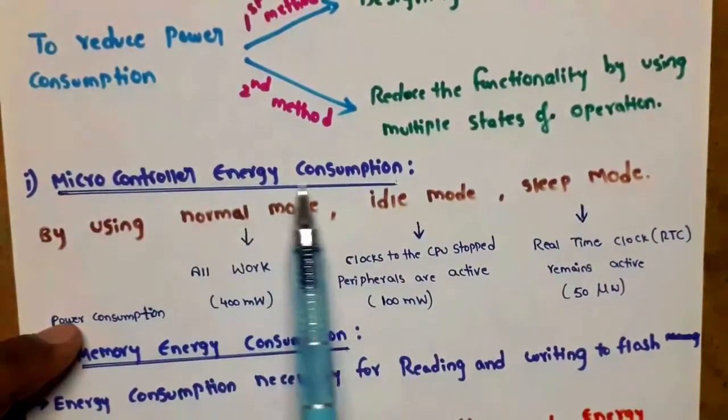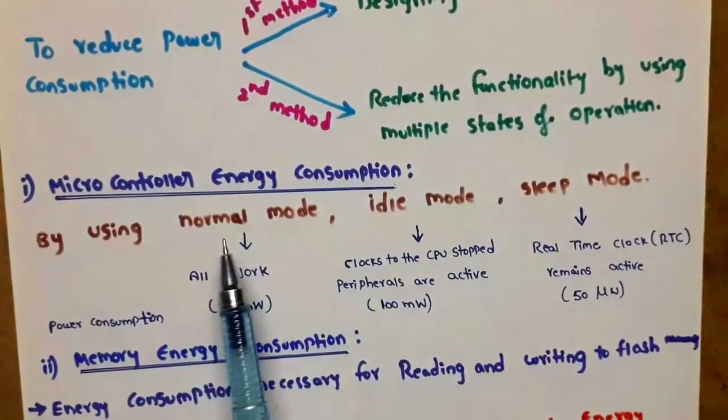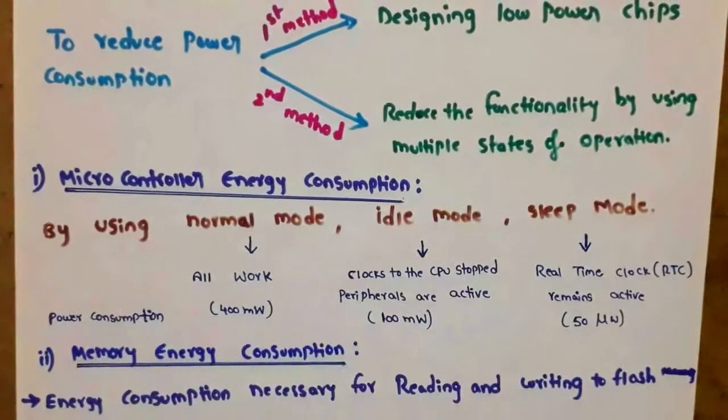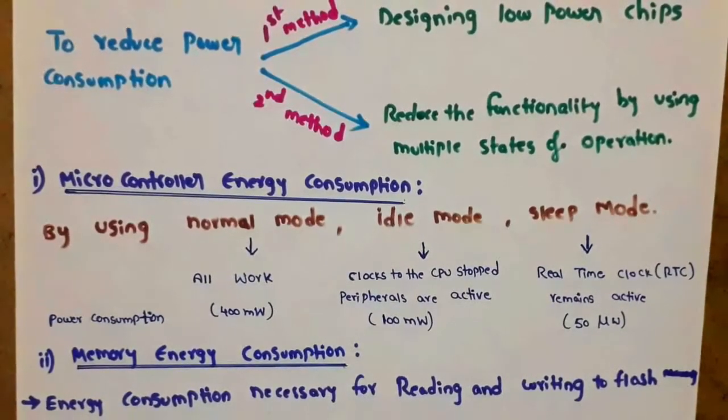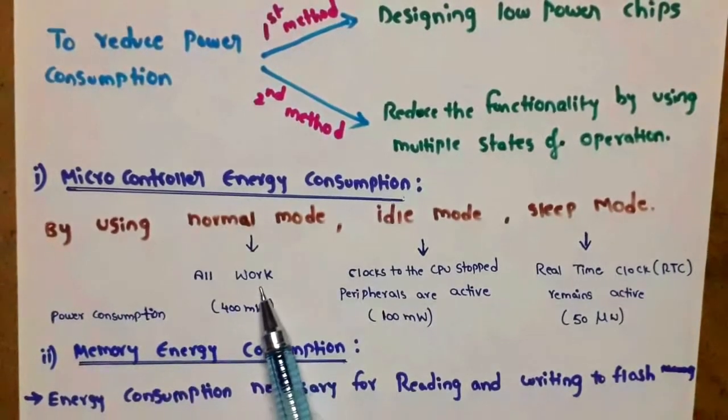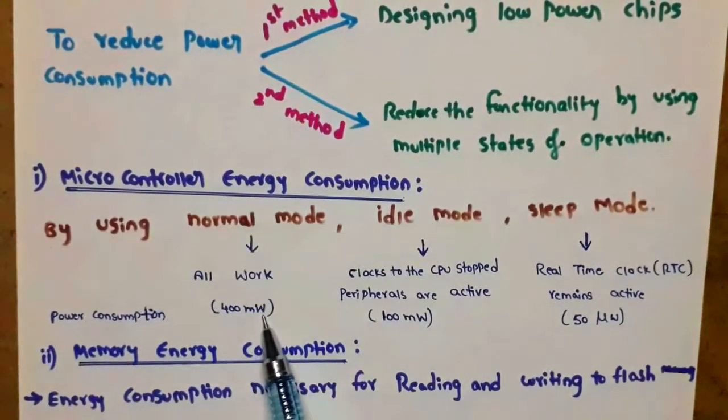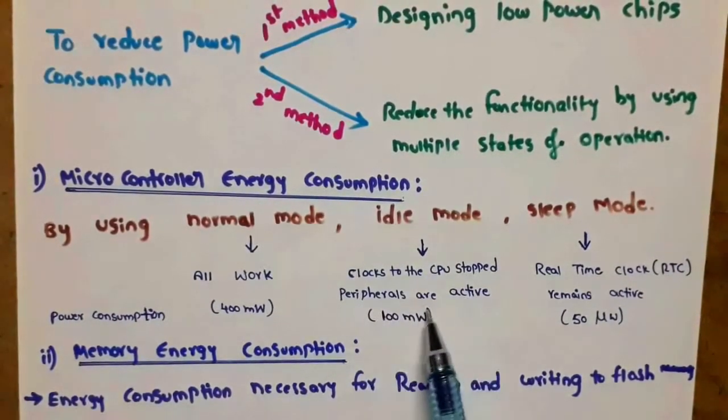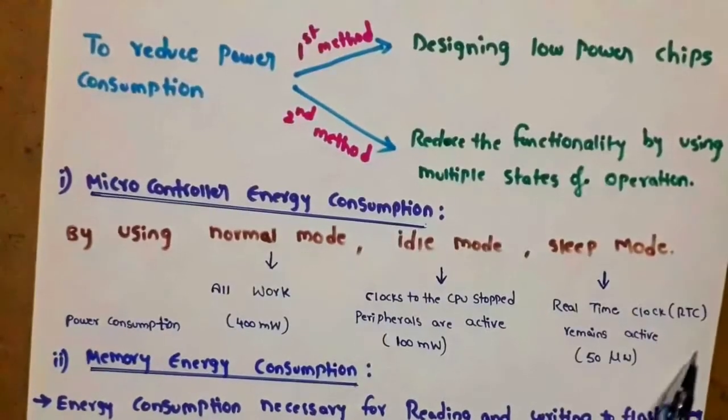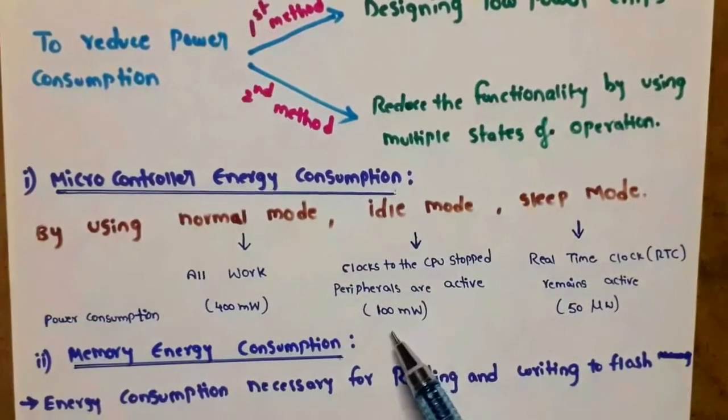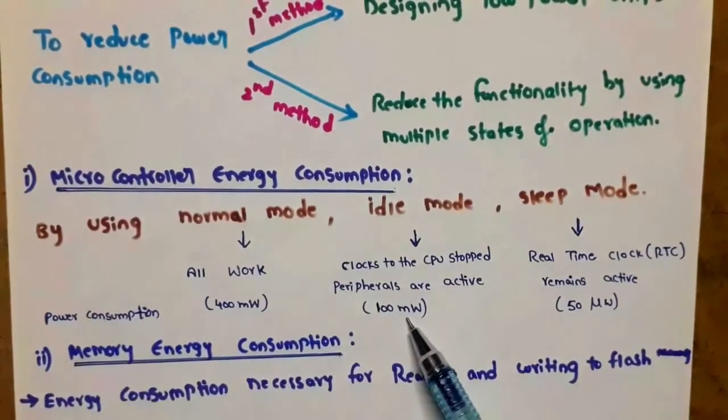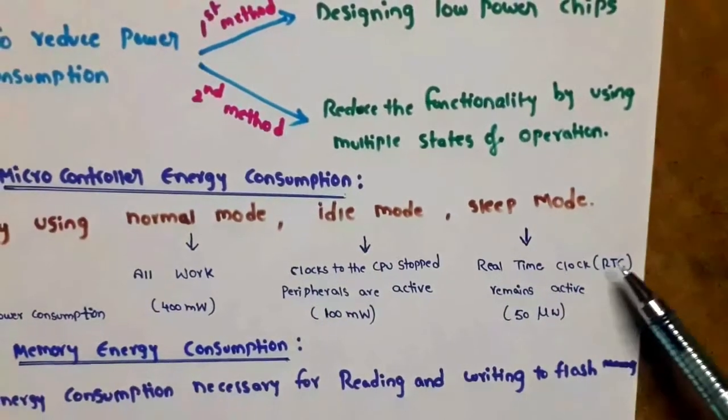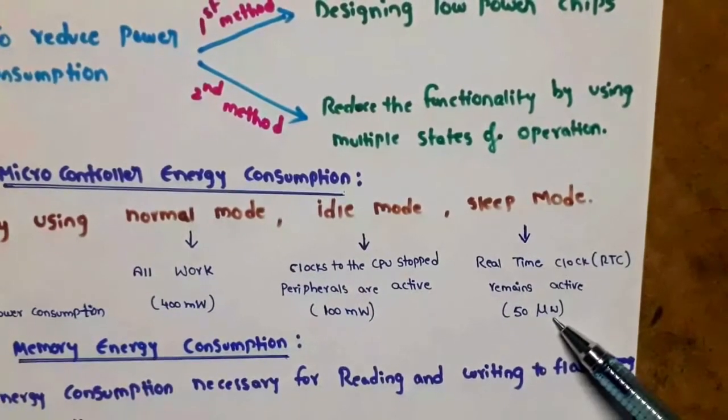For microcontroller energy consumption, we have three modes: normal mode, idle mode, and sleep mode. In normal mode, power consumption is 400 milliwatts. In idle mode, clocks to the CPU stop and peripherals are active, with power consumption of 100 milliwatts. In sleep mode, only the real-time clock is on, consuming 50 microwatts.